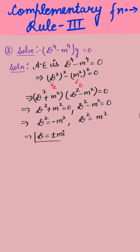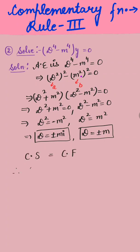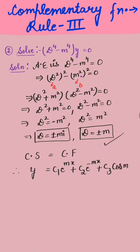So D = +mi, -mi, +m, -m — four roots. The complete solution equals the complementary function, therefore: y = c₁e^(mx) + c₂e^(-mx) + c₃cos(mx) + c₄sin(mx). This is our answer.